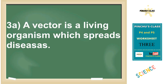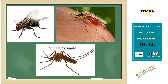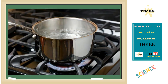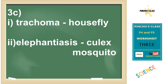Number three A: a vector is a living organism which spreads diseases. Number three B: ways of making water safe for drinking — the most common way is boiling the water.